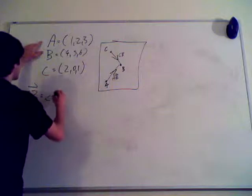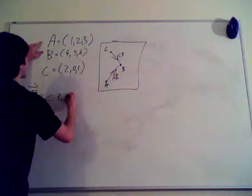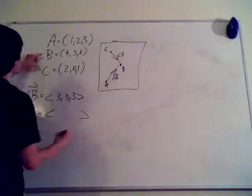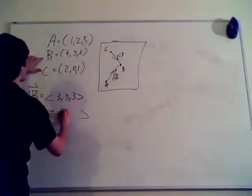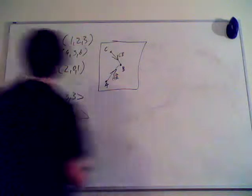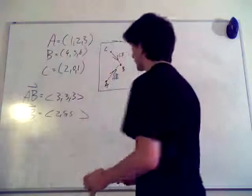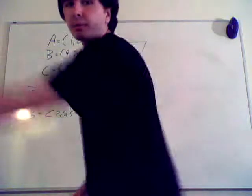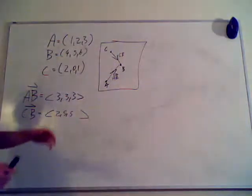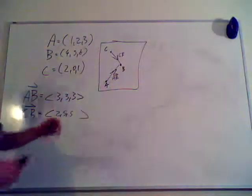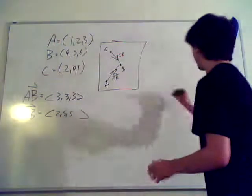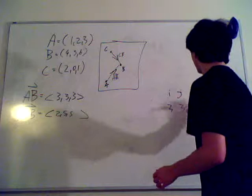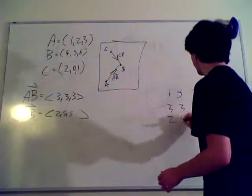AB is three, three, and three. And CB is two, five, and five.